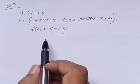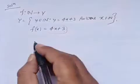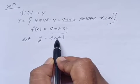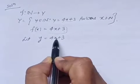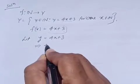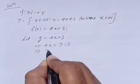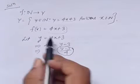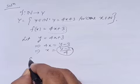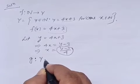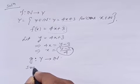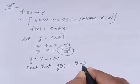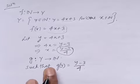Now we need to find g, i.e., f inverse. For this, let y = 4x + 3 and solve x in terms of y. So 4x = y − 3, which gives x = (y − 3)/4. Using this rule, we can define g: Y → N such that g(y) = (y − 3)/4.